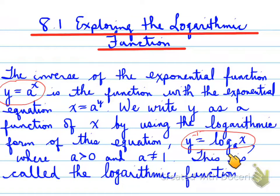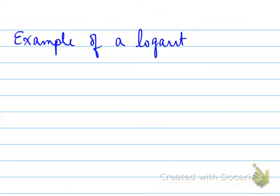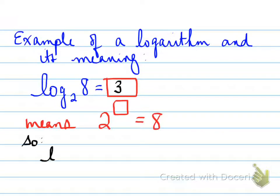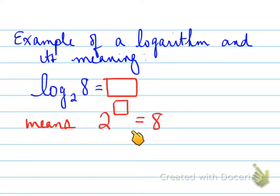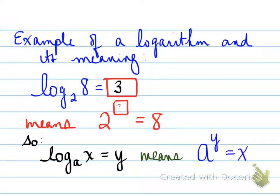Note the inverse here: if this is y, this is y inverse of the same function. For an example of a logarithm and its meaning — log base 2 of 8 equals some number means that 2 to the power of that answer is equal to the argument 8. So 2 to the power of what gives you 8? The answer is 3. In general, log base a of x equals y means a to the power of y equals x.